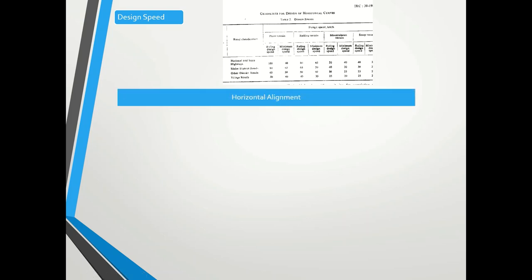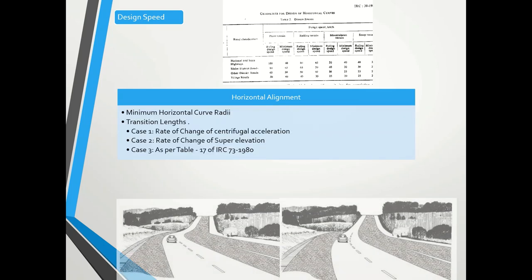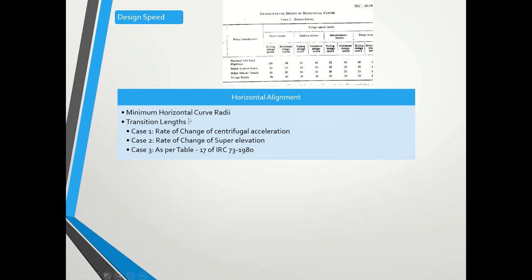Next is horizontal alignment. The first important element is the minimum horizontal curve radius, which is entirely dependent on design speed. If you are following 100 km/h speed, the minimum curve radius required is around 360 m, but the standard has now been increased to 400 m for a four-lane road. This value is given in the Highway Design Manual, IRC SP 84 — you can refer to it.